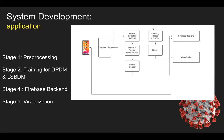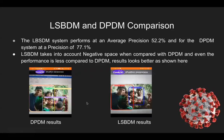When comparing LSPDM and DPDM results, the average performance of the LSPDM system is 52.2% while DPDM is 77.1%. However, there are some cases in which LSPDM performs better than DPDM. LSPDM takes into account the negative spaces in an image, while DPDM does not. As shown in the image below, the results of LSPDM are much better compared to DPDM in those specific scenarios.